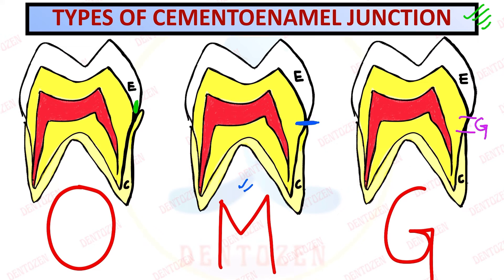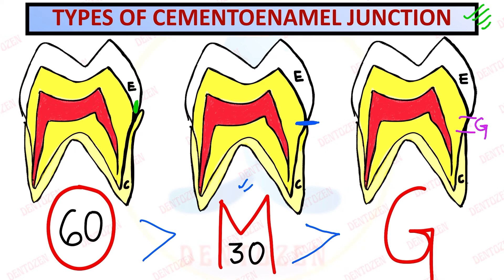There are three different types of cementoenamel junction, and you have to remember the mnemonic OMG: Overlap is seen in 60% of teeth, followed by edge-to-edge seen in 30% of teeth, and gap seen in only 10% of teeth. Remember OMG and their percentages. Normally they will meet edge-to-edge when everything is normal.